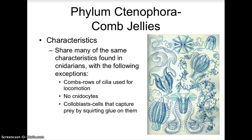Our last phylum in this group is phylum Ctenophora — these are comb jellies, some really cool organisms. They share many characteristics with cnidarians with the following exceptions: comb jellies have rows of cilia used for locomotion; they do not have nidocytes or stinging cells; and they have colloblasts, which are cells used to capture prey by squirting glue on them. In true jellies, the nidocyte shoots out and harpoons the organism, injecting venom to paralyze it.